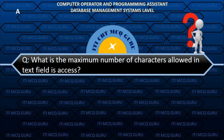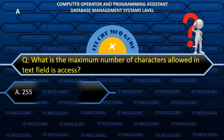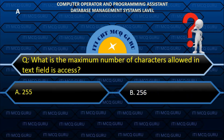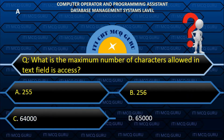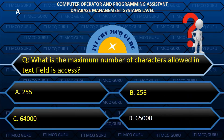What is the maximum number of characters allowed in a text field in Access? A. 255.